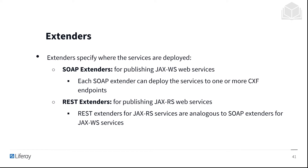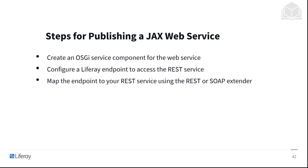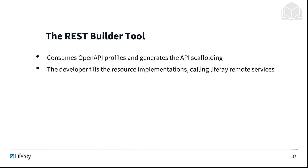The steps for publishing a JAX-WS web service are: first, create an OSGi service component for the web service; configure a Liferay endpoint to access the REST service; and finally, map the endpoint to your REST service using the REST or SOAP extender. The REST Builder tool is an API generator tool that Liferay provides, which consumes OpenAPI profiles and generates the API scaffolding, including JAX-RS endpoints, parsing, XML generation, and advanced features like filtering or multi-part support. The developer only has to fill the resource implementations, calling Liferay Remote Services.